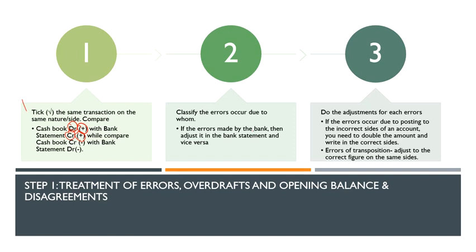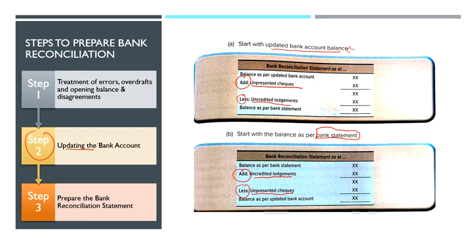If the errors are made by the bank, then you adjust them in the bank statement section. And vice versa — if the business made the error, then adjust it in the bank account. If the bank made the error, adjust in the bank statement — that is in step three, to prepare bank reconciliation. If the business made the error, you will adjust in step two, which is updating the bank account.